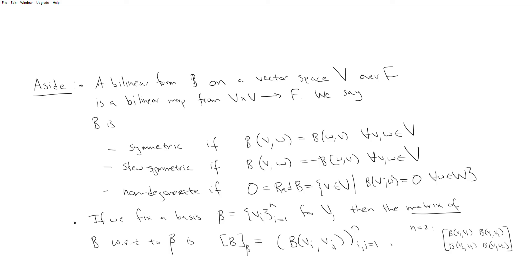To be more precise, this definition is really that of a left radical, but because we're only going to be looking at symmetric and skew-symmetric bilinear forms, the left radical and right radical are the same notion. Recall that if we fix a basis for V, then the matrix of the bilinear form with respect to that basis is given pairwise, where the (i, j) entry is B(v_i, v_j). From this matrix you can recover the bilinear form's action on any vector in the space, using linearity.